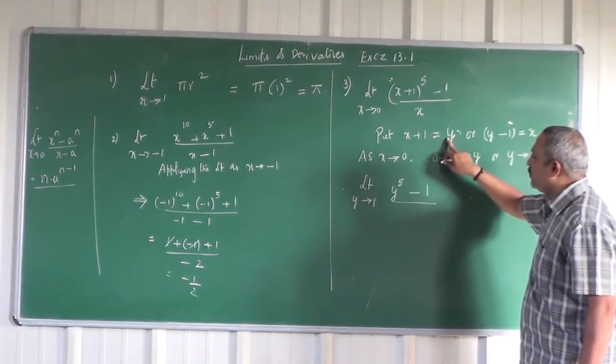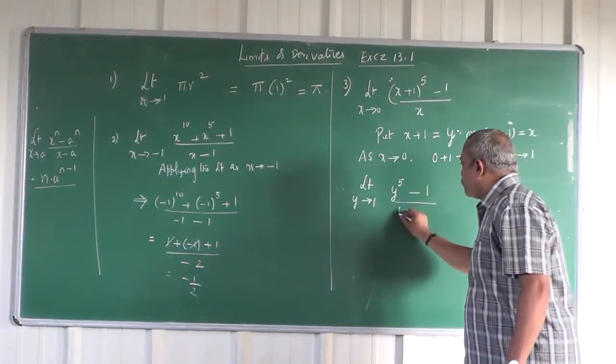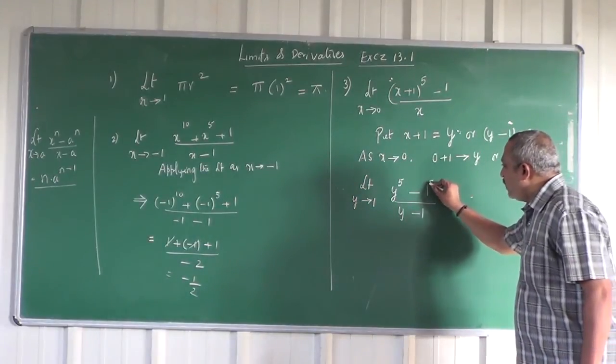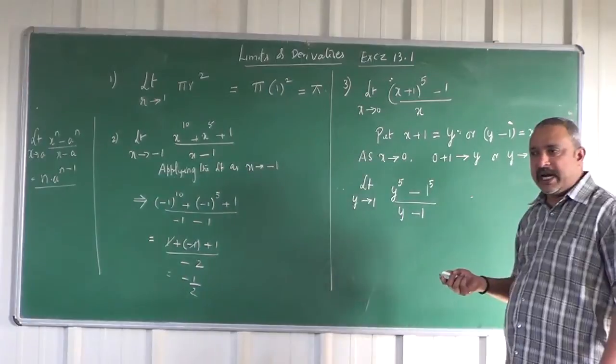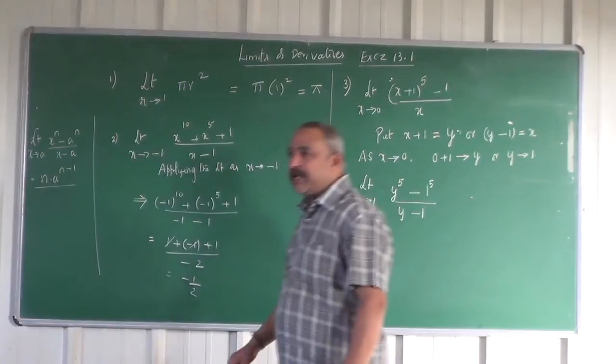So for x, now you substitute y - 1. In fact, this 1 can be written as 1^5 without any harm. Now you see that this form and the formula form are totally matching.